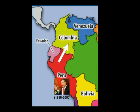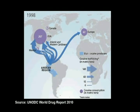The balloon effect is not only present in the production of the drug. It is also evident in the routes used to smuggle it. This map shows the routes used by cocaine dealers in 1998. The consumption in the United States was 267 metric tons a year. Most of that drug was entering the country through the Caribbean and the Pacific Ocean. During those years, the United States implemented a plan to reduce the smuggling of cocaine by sea.